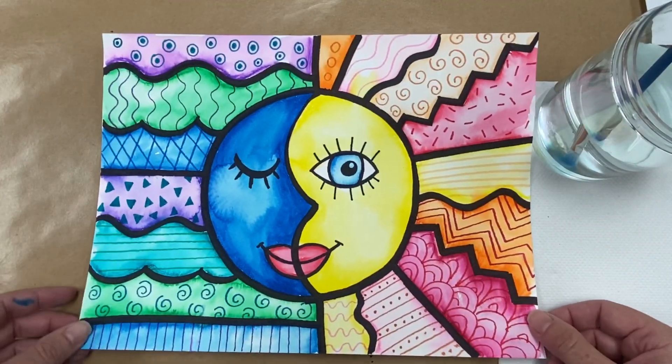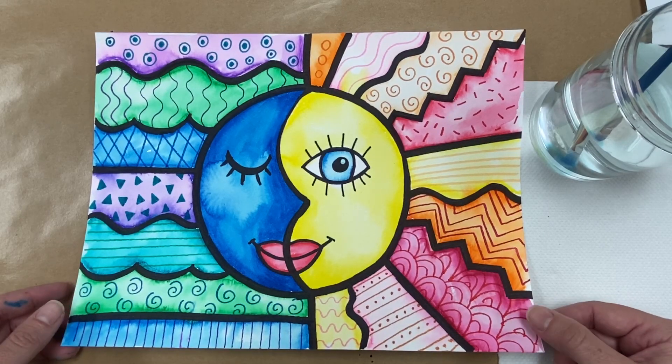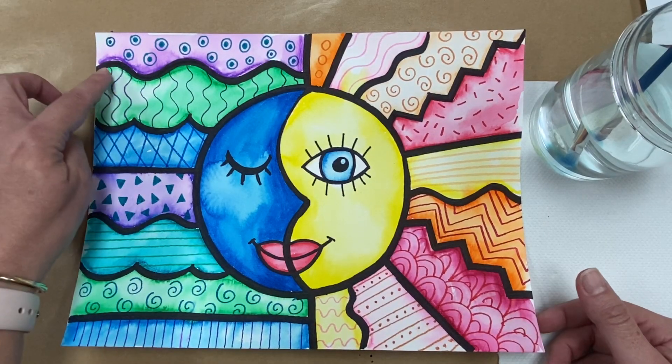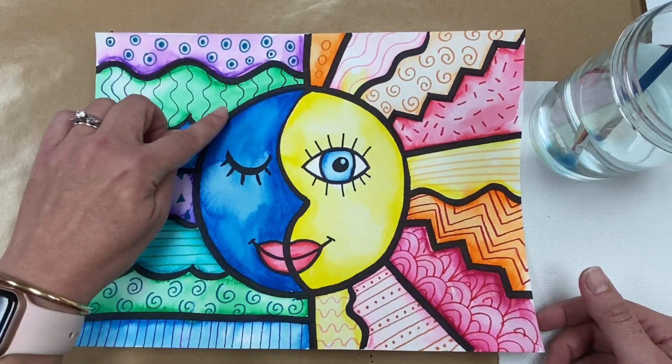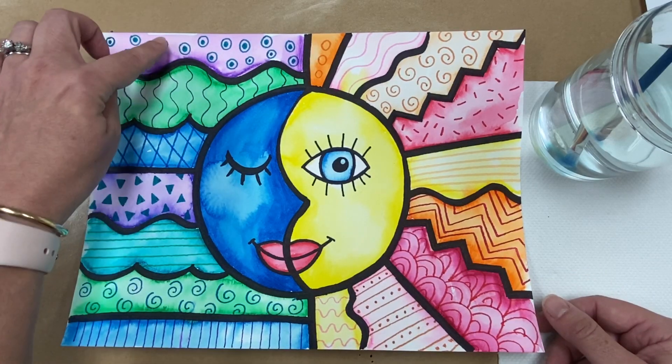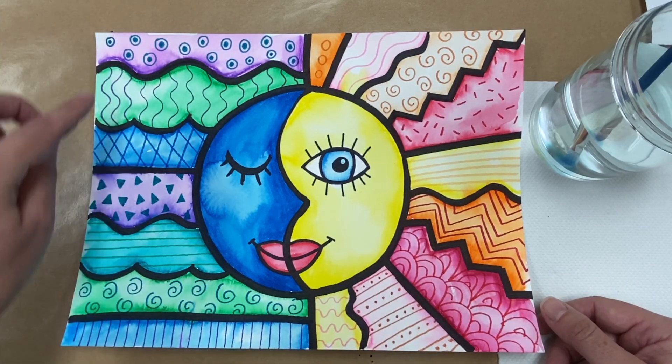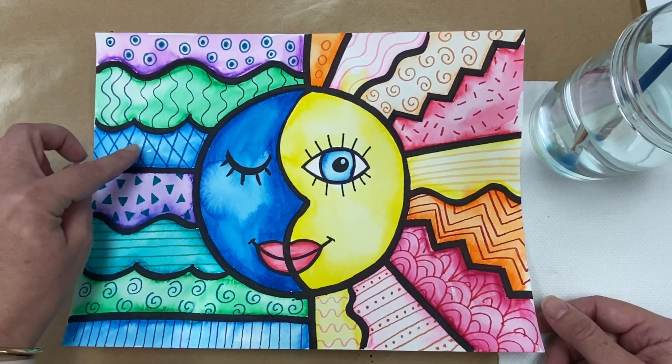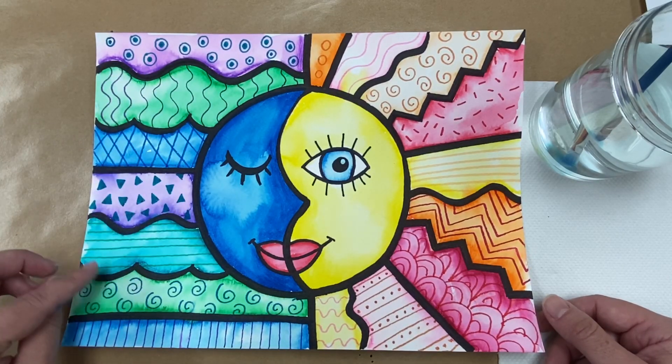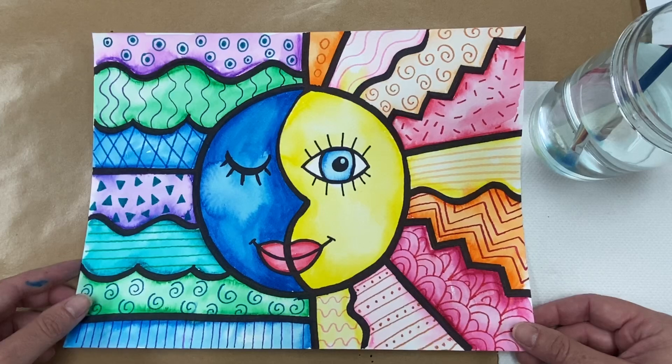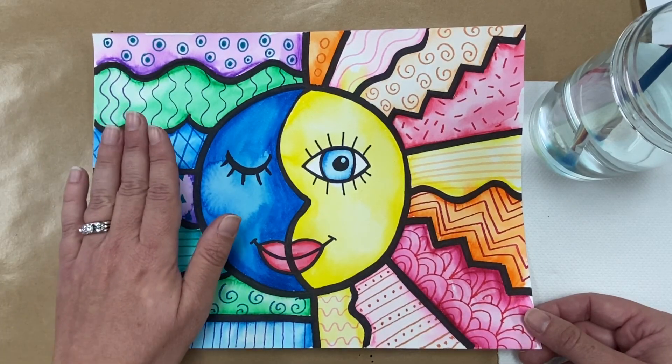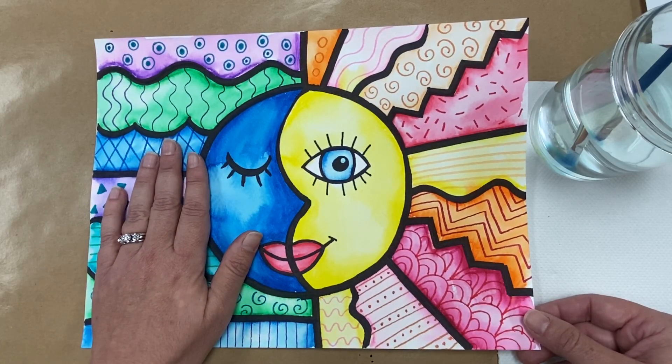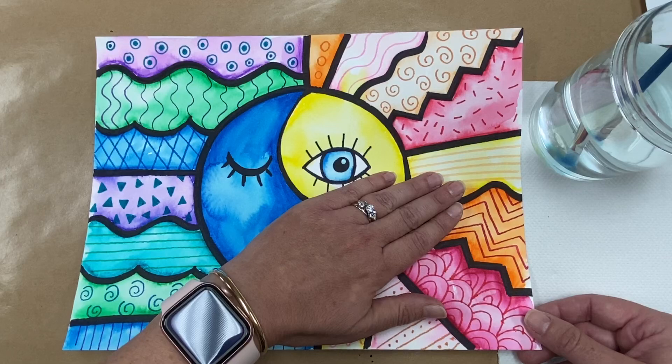So on this piece of artwork we're going to be using lots of elements of art. We're going to use line, different kinds of line. We're going to use shapes. We're going to be making patterns. That's when we repeat shapes and lines and colors over and over again. And we're going to really be talking about color because we're going to have cool colors on one side of our picture and warm colors on the other.